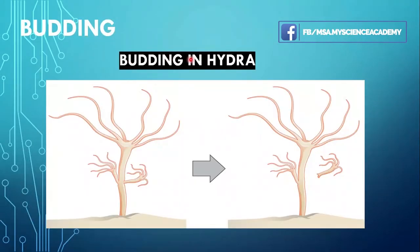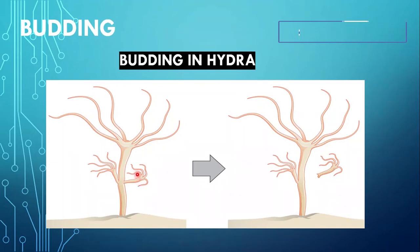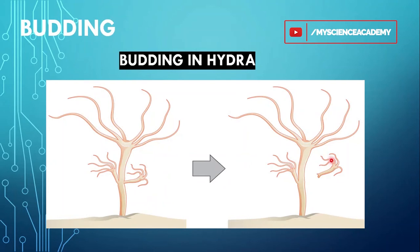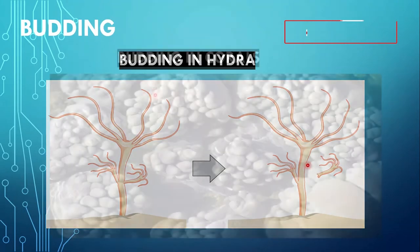Now let's look at budding in hydra. This is a diagram of hydra. In the parent body of hydra, through the process of mitosis, a new small bud is formed. Then through cell division in this bud, it enlarges. And finally it detaches from the parent body and grows into a new hydra.